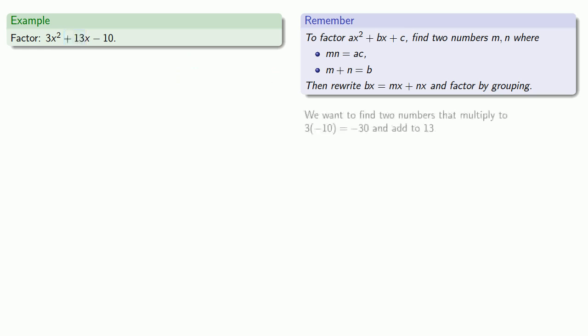So we want to find two numbers that multiply to 3 times -10, negative 30, and add to 13. Now as a general rule, the numbers that multiply to a given value are much more limited than the numbers that add to a given value.